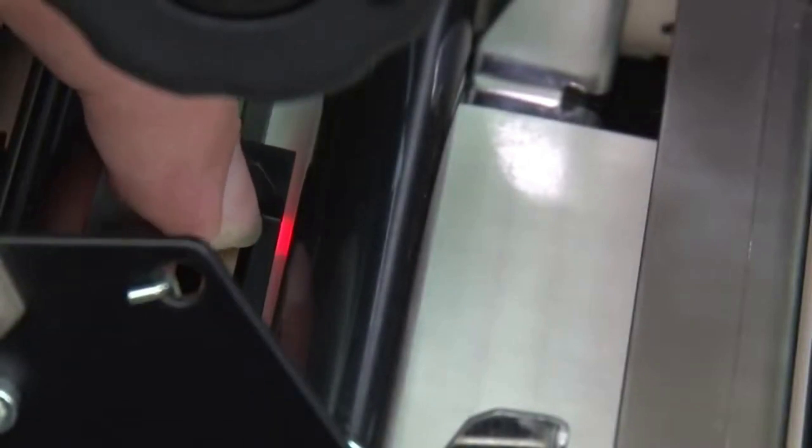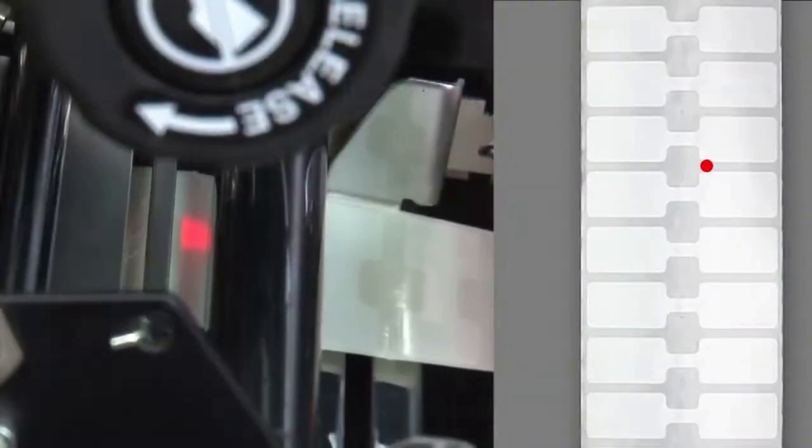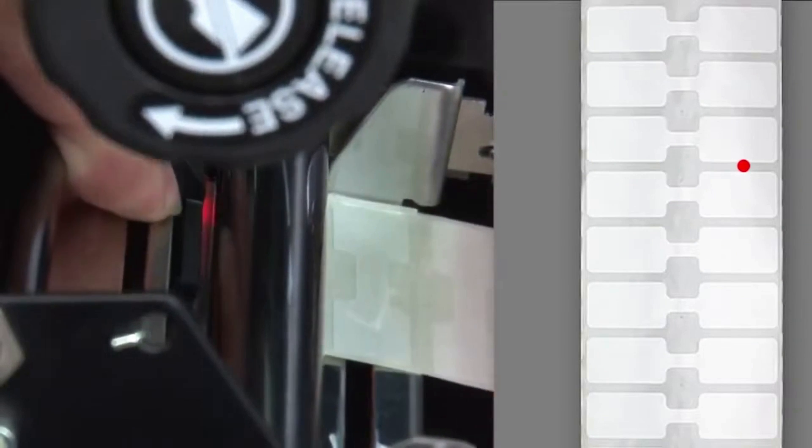If you are using media with a gap, also referred to as a web, a hole, or a notch, you want to make sure that the upper and lower sensors are in the optimal positions to identify that feature.